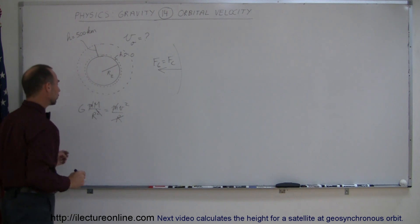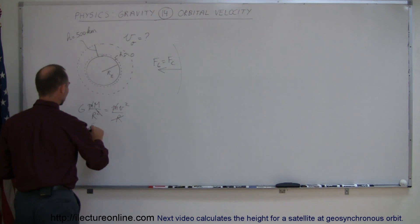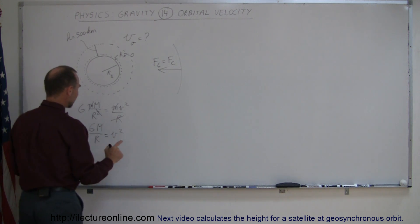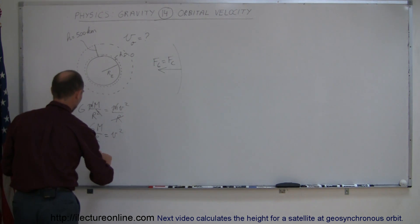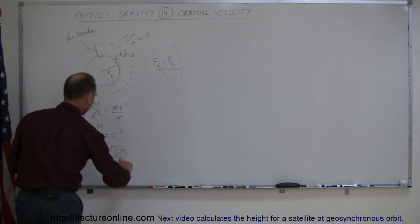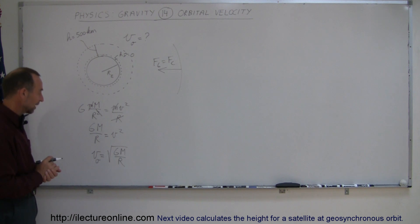This R will cancel out one of those, and so now what we have is GM over R is equal to v squared. If we reverse the equation and take the square root of both sides, we can say that the velocity is equal to the square root of GM over R. And this is then known as the orbital velocity, so we'll call it v sub o for orbital velocity.